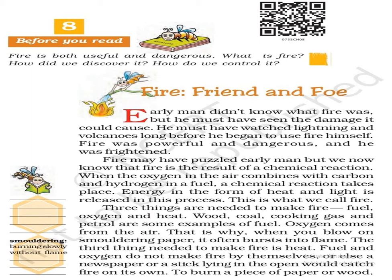Fire may have puzzled early man, but we now know that fire is the result of a chemical reaction. आग ने आदि मानव को दुविधा में डाल दिया होगा, परन्तु अब हम जानते हैं कि आग एक रासायनिक क्रिया का परिणाम है. When the oxygen in the air combines with carbon and hydrogen in a fuel, a chemical reaction takes place. जब वायु की oxygen किसी ईंधन की carbon तथा hydrogen से मिल जाती है तो एक रासायनिक क्रिया आरंभ हो जाती है. Energy in the form of heat and light is released in this process. इस क्रिया में ताप तथा प्रकाश के रूप में ऊर्जा मुक्त होती है. This is what we call fire. इसी को हम आग कहते हैं.